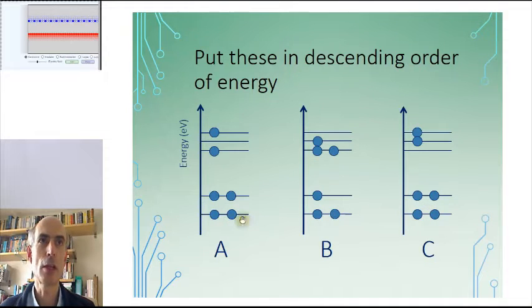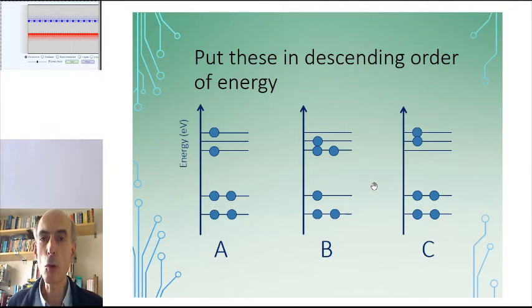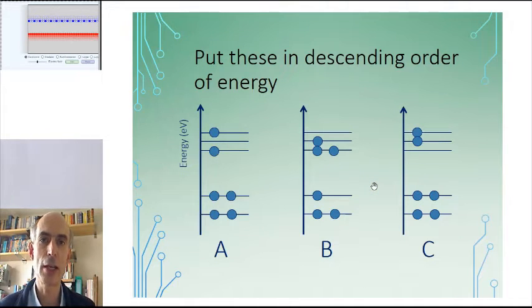The ground state of this atom would have two electrons here, two electrons here, and two electrons in this lowest energy state here. So these are all excited states of this atom.